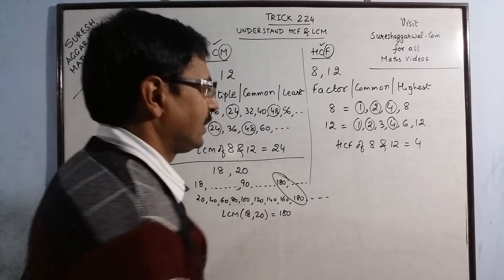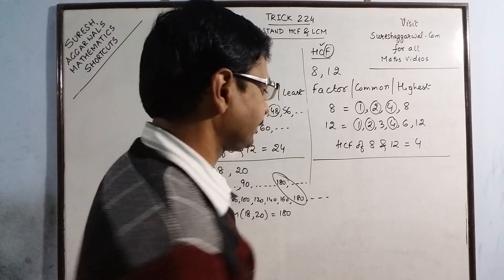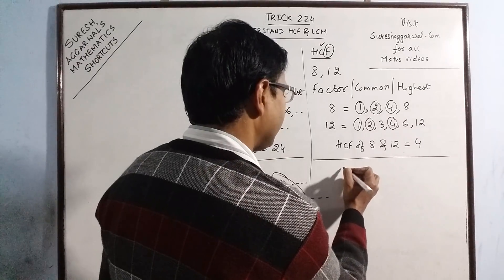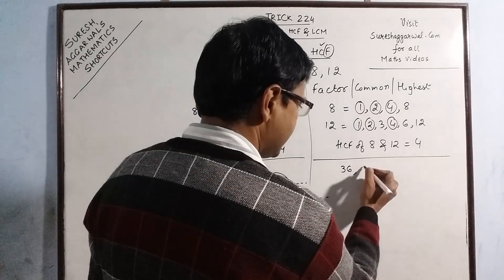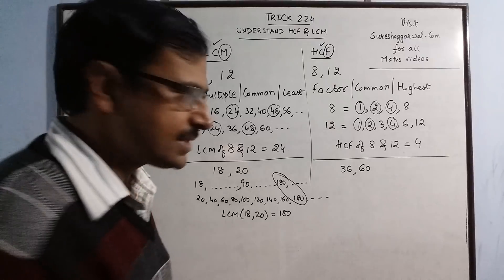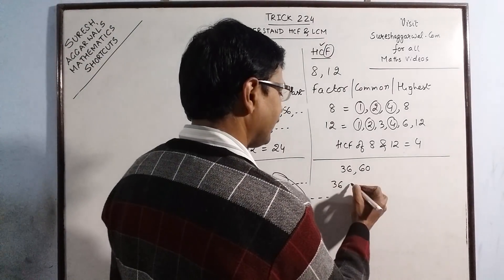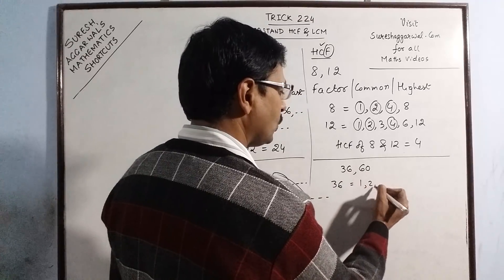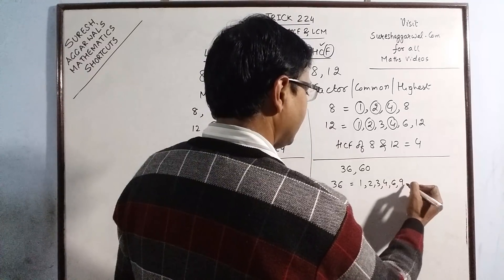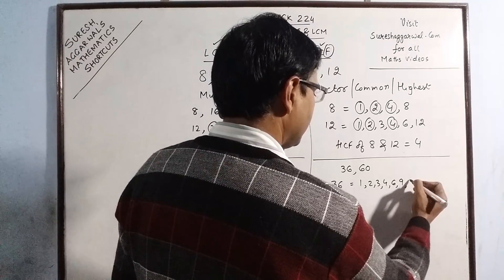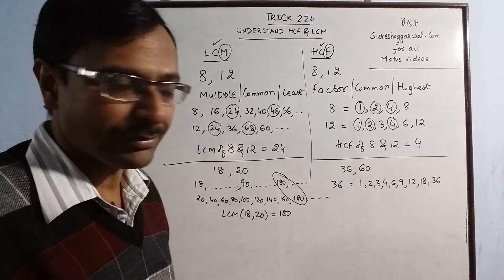Now suppose you want to find the HCF of two more numbers. Say we have 36 and we have 60. Now see 36 and 60. If you write 36 as the factors: 1, 2, 3, 4, 6, 9, 12, 18 and 36. See, I have written all the factors of 36.